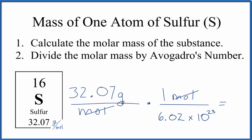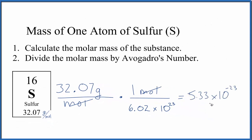When we do the math we get 5.33 times 10 to the negative 23rd, and the units are grams.